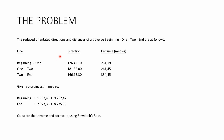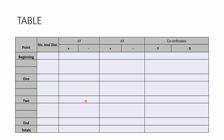We have a problem in front of us. The problem states the reduced oriented directions and distances of a traverse beginning to end, giving different lines — each line being one point to another — showing the direction and distance between them. It also gives coordinates for the first and last station. We've named them 'beginning' and 'end' for simplicity. We are asked to calculate the traverse and correct it using Bowditch's method.